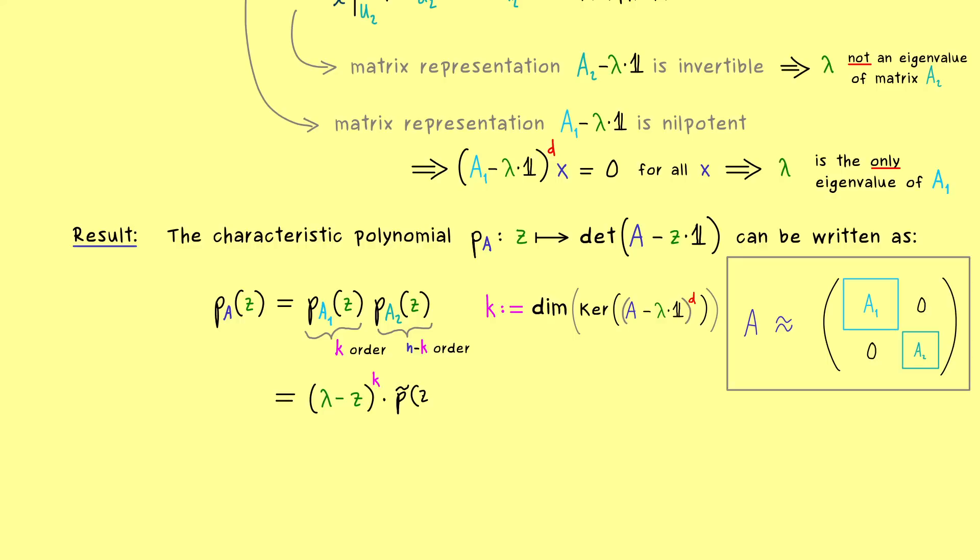And this goes to the power k. And now it does not matter how the explicit characteristic polynomial looks like. We just know there is a polynomial now which does not have lambda as a zero. So if we put lambda into p tilde we don't get out zero which means all the linear factors with lambda as a zero are in the front already.